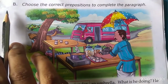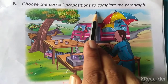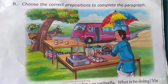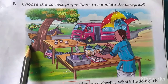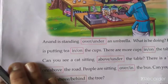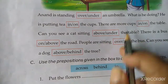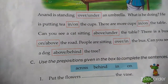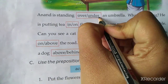Now let's do the next worksheet — choose the correct prepositions to complete the paragraph. Look at the picture carefully. Can you see a vendor here who is serving tea? There is a small puppy and a van. Anand is standing over or under an umbrella — he is standing under the umbrella. He is putting tea in the cups.